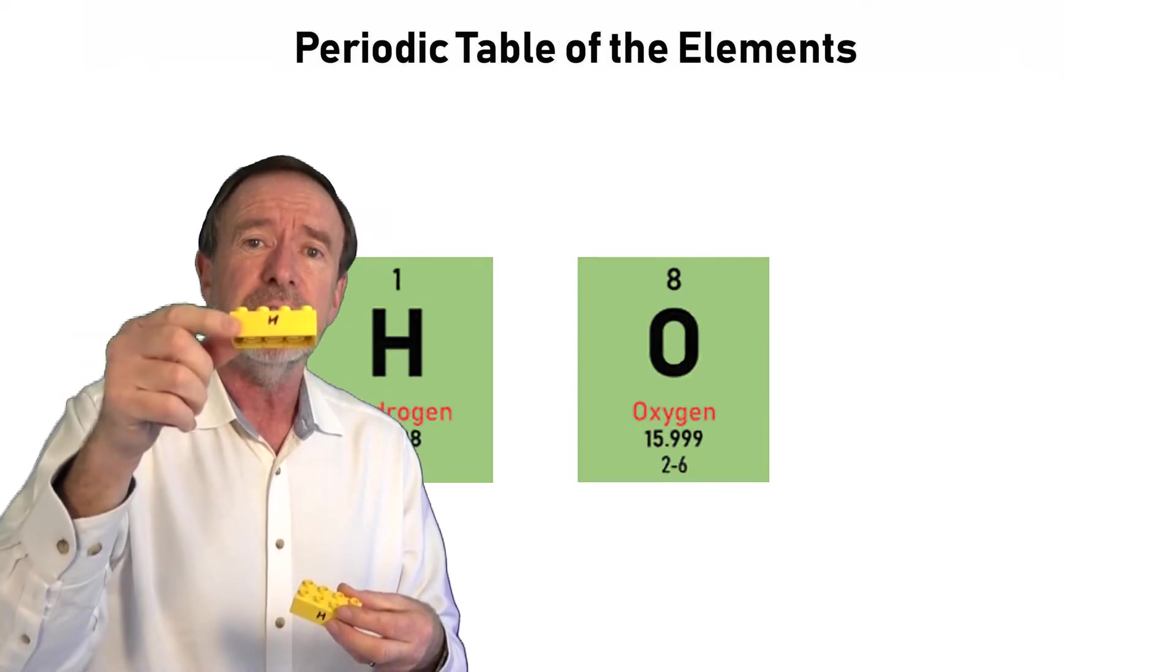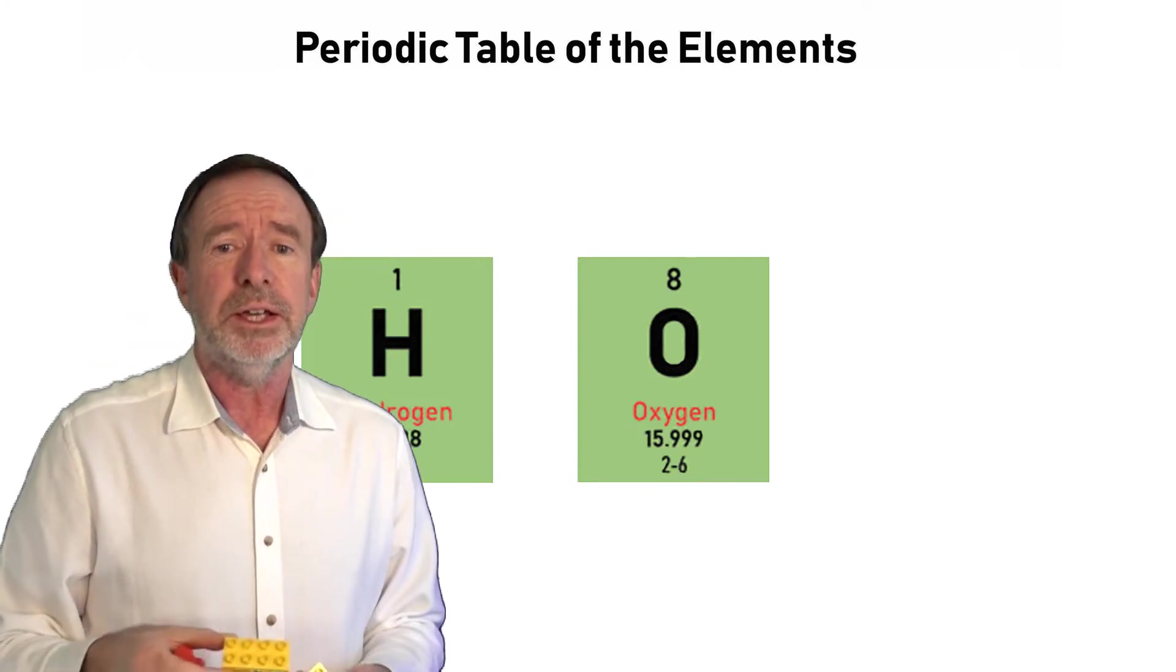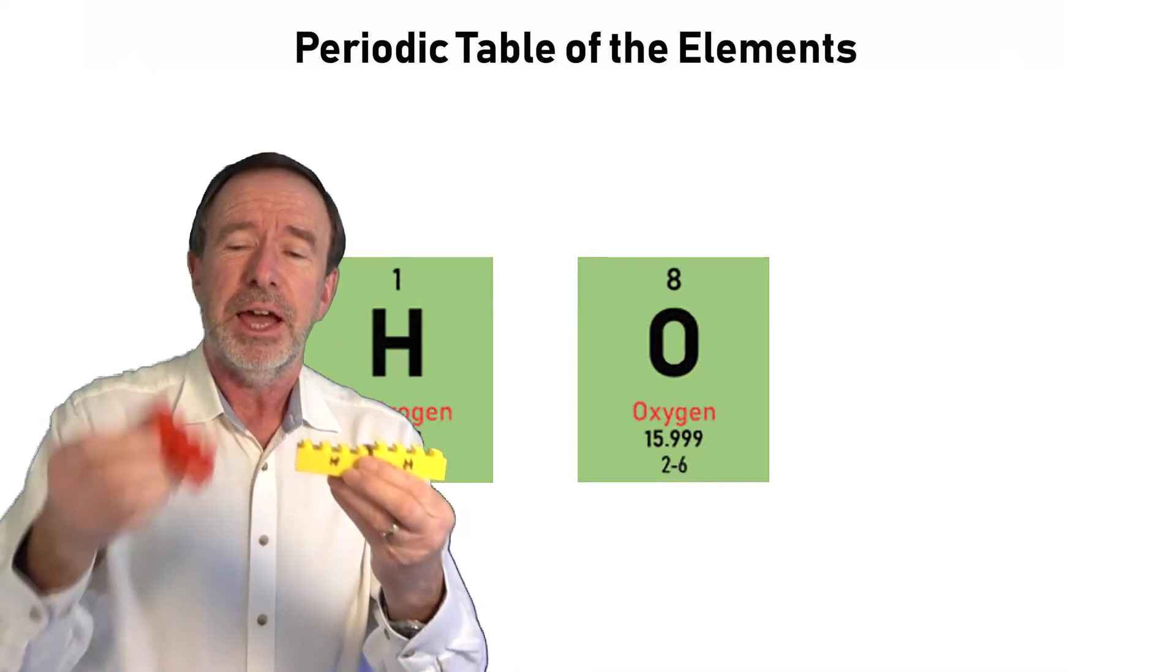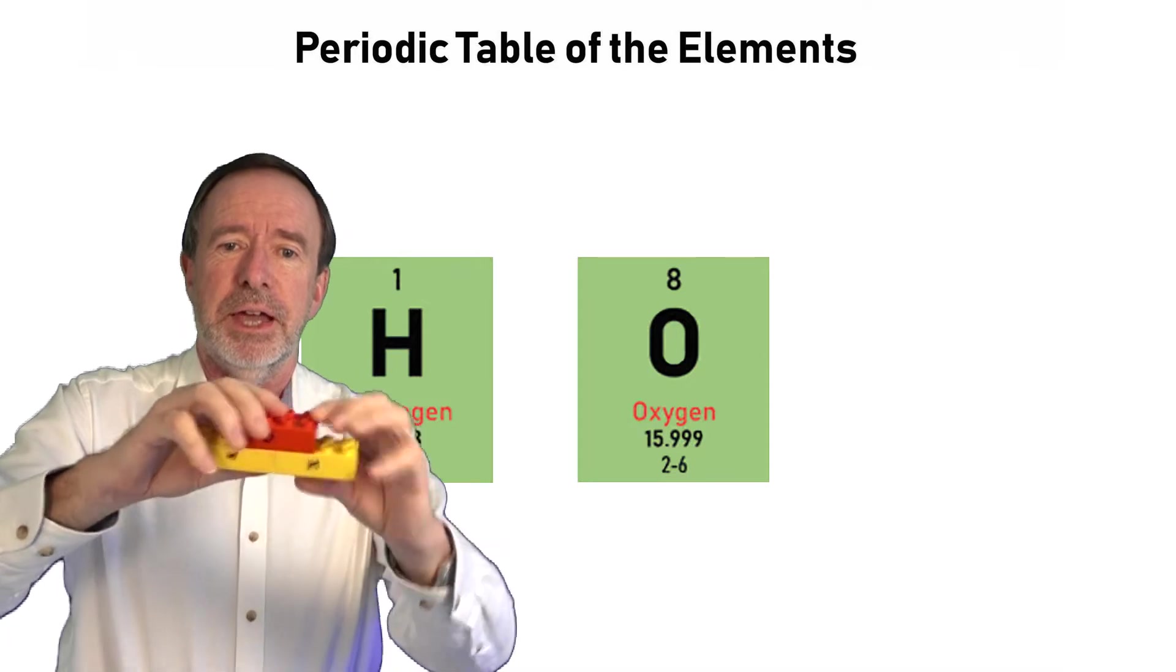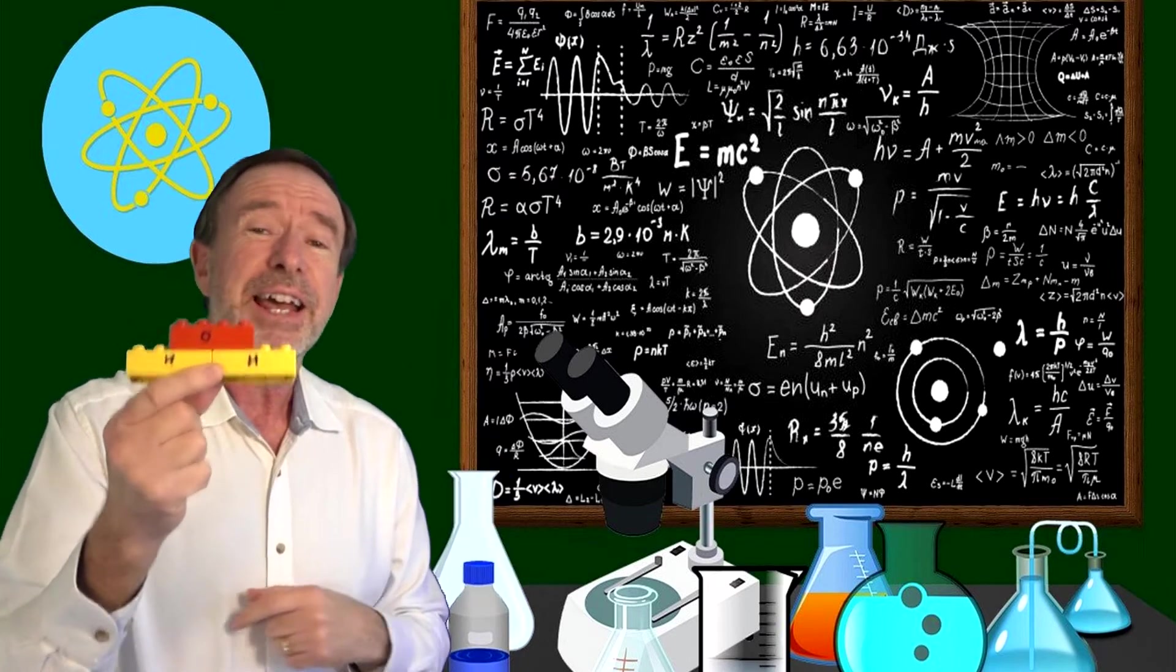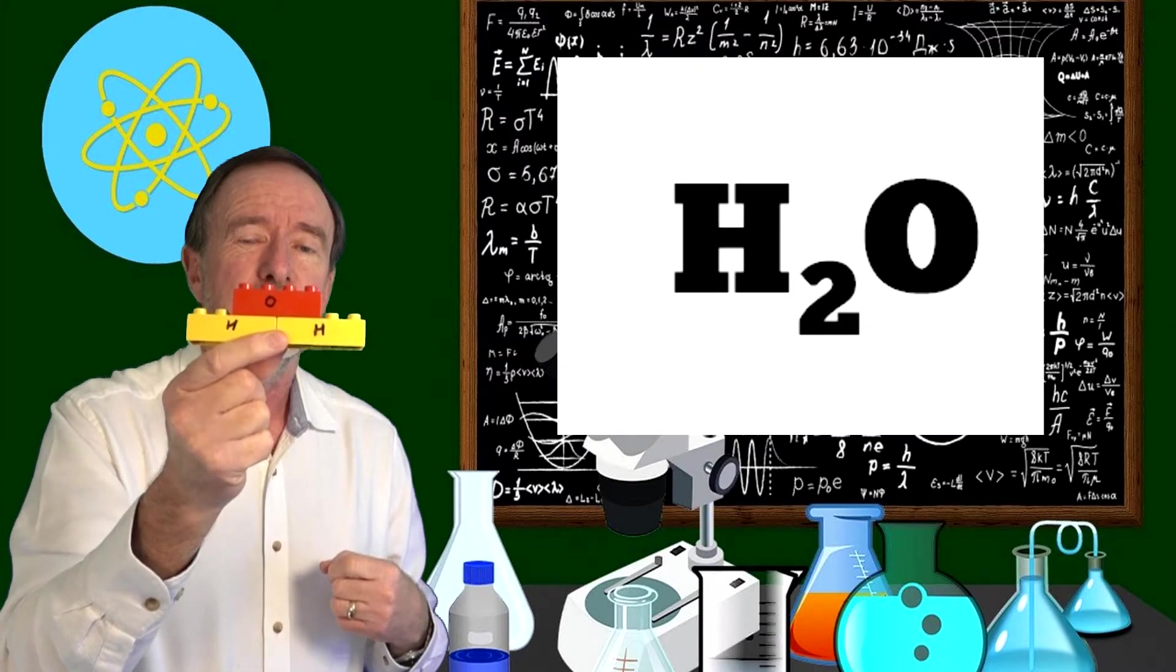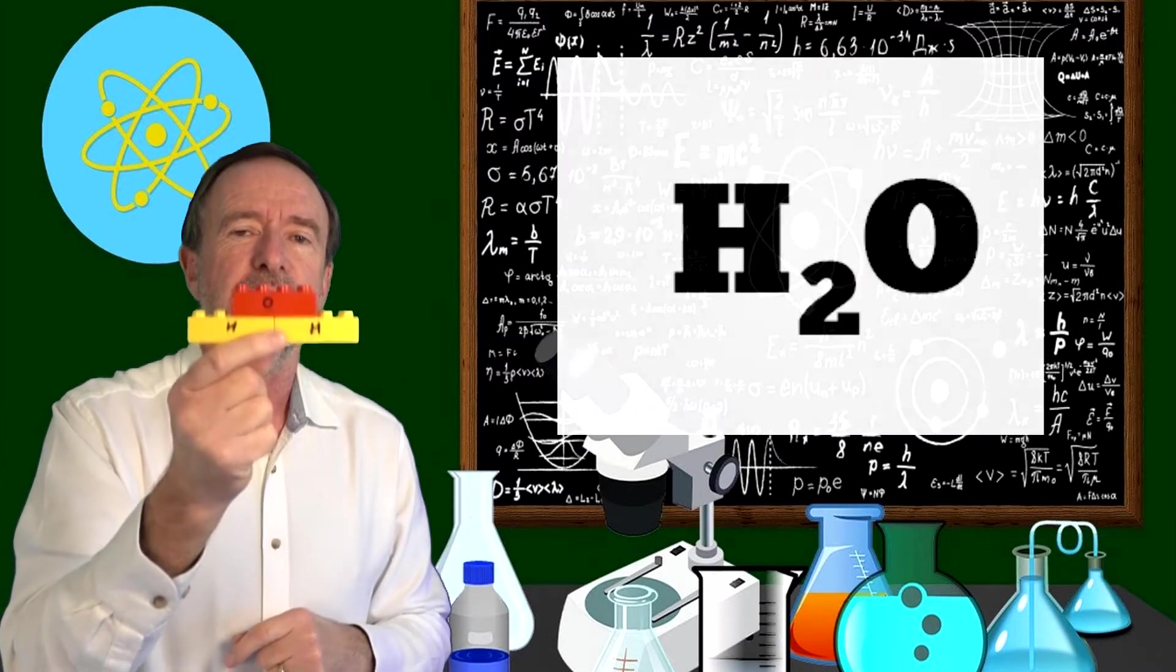And water is made up of two lots of hydrogen and one lot of oxygen. And they fix together a bit like that. So you see there's two H's and one O. And that's why people often refer to water as H2O, because it's made up of two lots of hydrogen and one lot of oxygen.